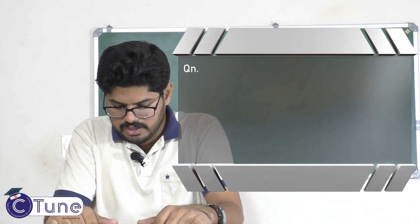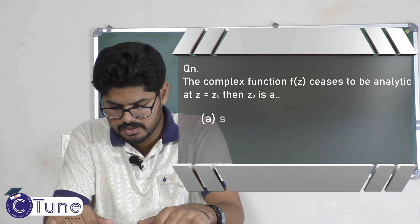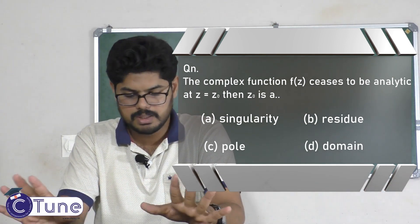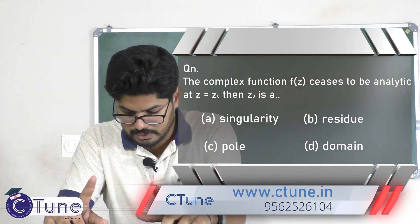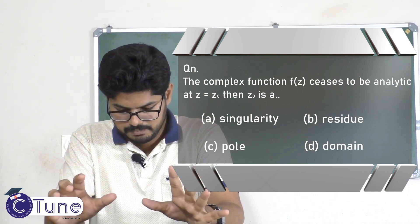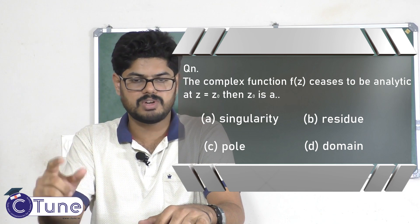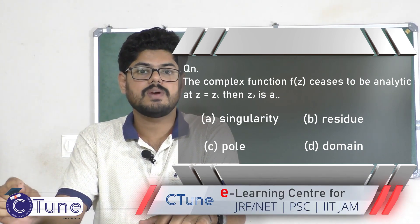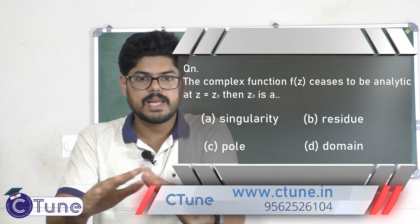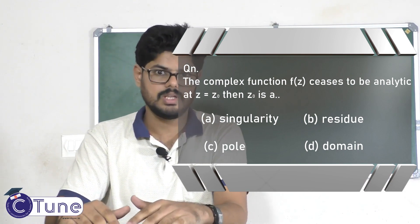The complex function f(z) ceases to be analytic at z equal to z₀ — then z₀ is a what? The options are singularity and residue. This is a confusing question. A singularity occurs when a complex function becomes infinite — for example, f(x) = 1/x becomes infinite at x = 0, so x = 0 is a singularity. There are different types: singularity, pole of order, and essential singularity.